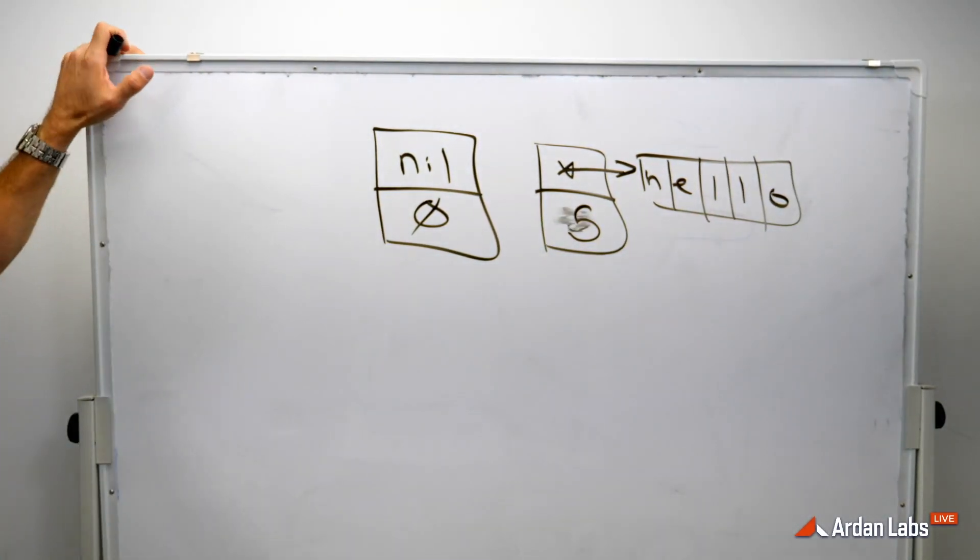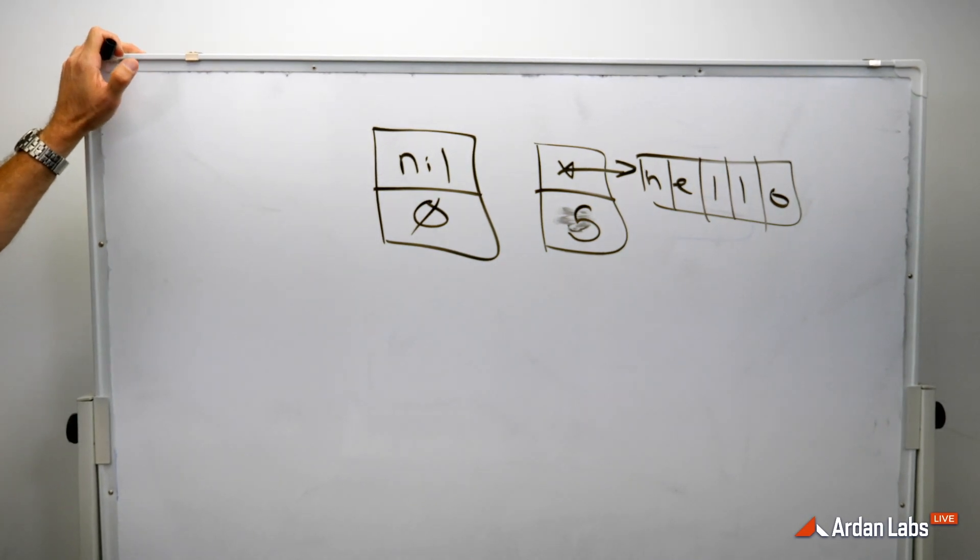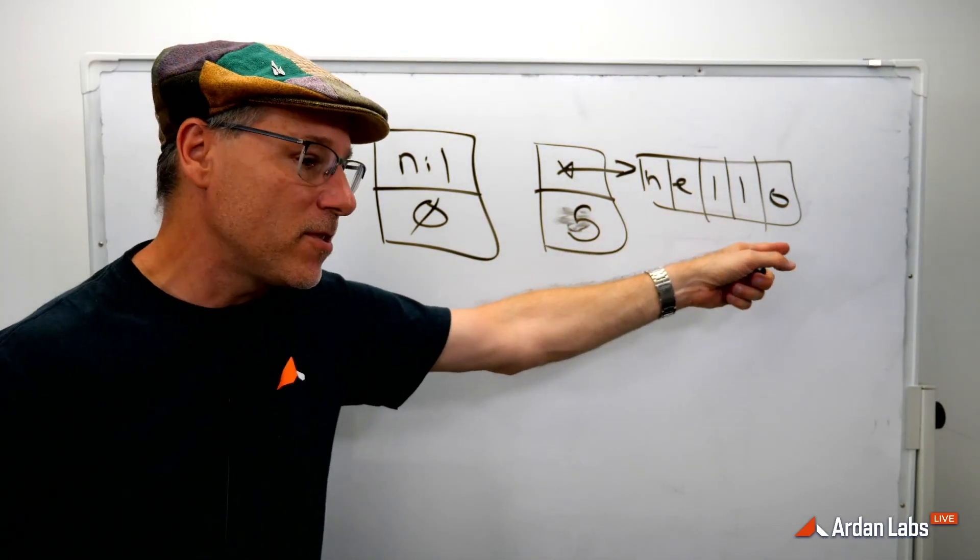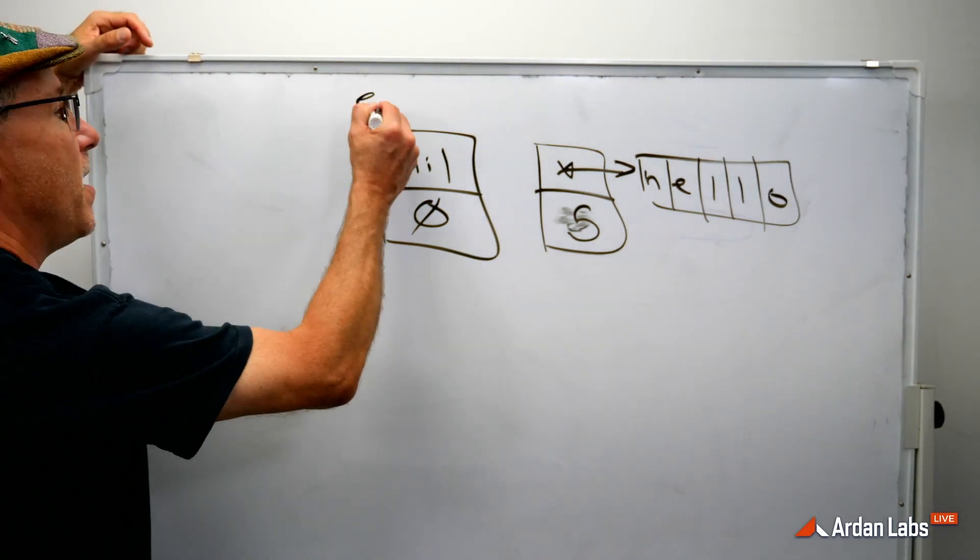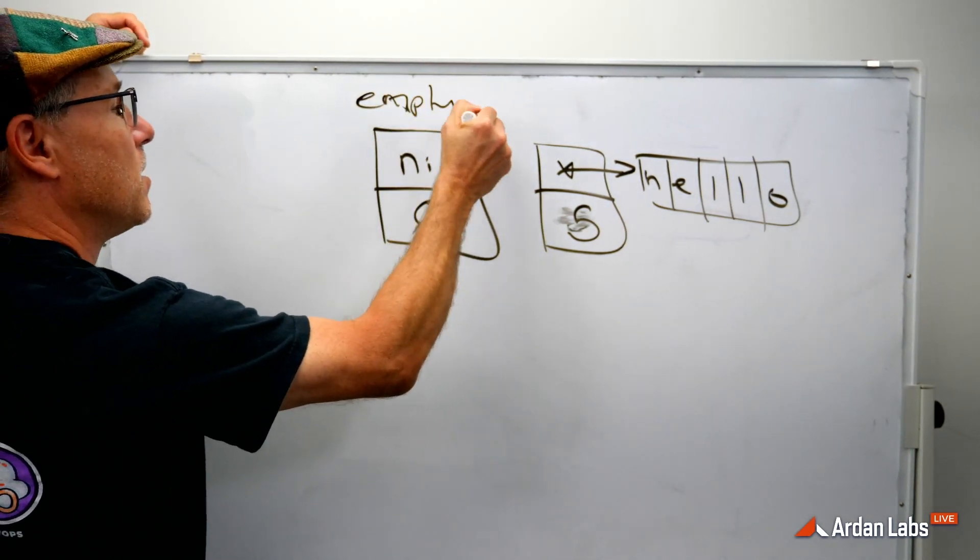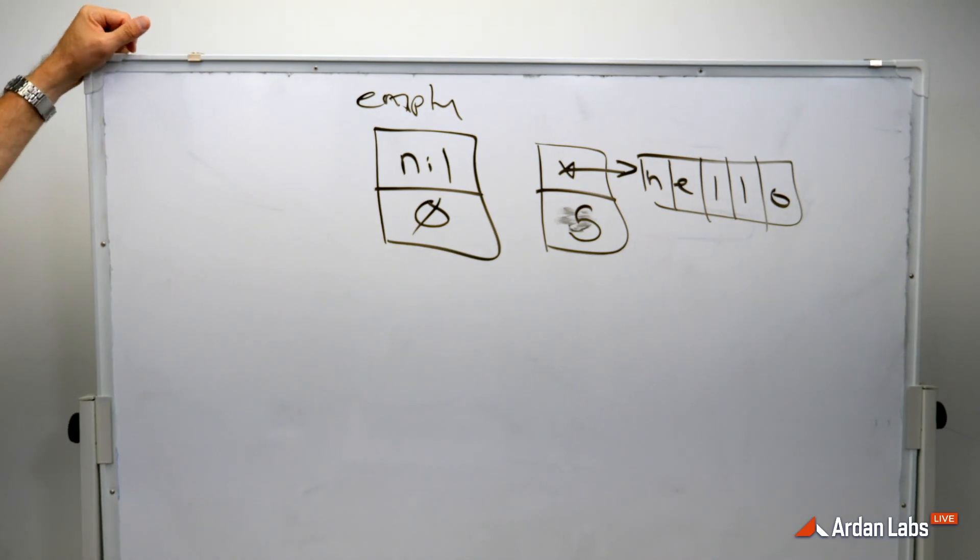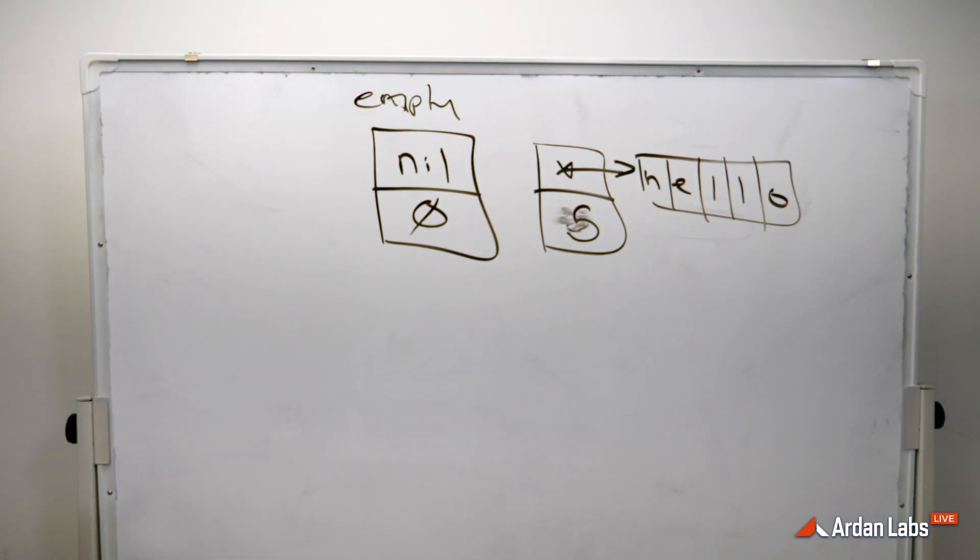The second value represents the number of bytes in that string. So when it comes to strings, this would be your empty string, this would be a non-empty string. It's a two-part data structure.